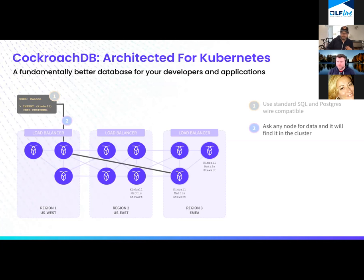Number two: you can ask any node in a cluster for data and it will find that data throughout the cluster. Every node is a single consistent gateway to the entirety of the database. This is what allows us to be one single logical database — I can ask any node and I'm going to find that data.